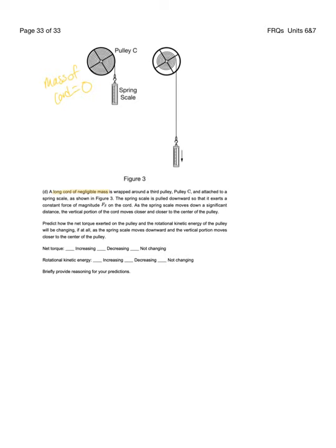It's wrapped on a third pulley C attached to the spring scale. So this is like the first part we're using a spring scale, we're going to pull it downward and that way we know exactly what the force is and we can determine that it's constant. So we have a constant force S being pulled down. The spring scale moves down a significant distance, the vertical portion of the chord moves closer and closer to the center of the pulley.